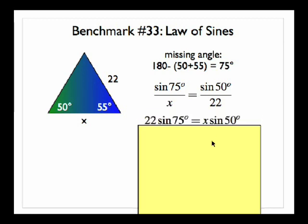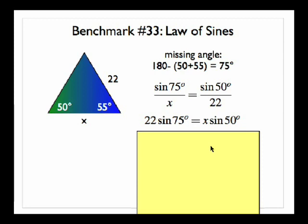I'm going to go ahead and cross-multiply. So I get 22 sine of 75 equals x times the sine of 50.